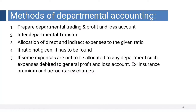Methods of departmental accounting. To maintain departmental accounting, first we should prepare a trading and profit and loss account for each department, handle interdepartmental transfers, and allocate direct and indirect expenses in their given ratios. If ratios are not specified in the problem, they have to be found based on salaries, purchases, sales, or floor areas. If some expenses cannot be allocated to any department, such expenses are debited to the general profit and loss account — for example, insurance premium and accountancy charges.